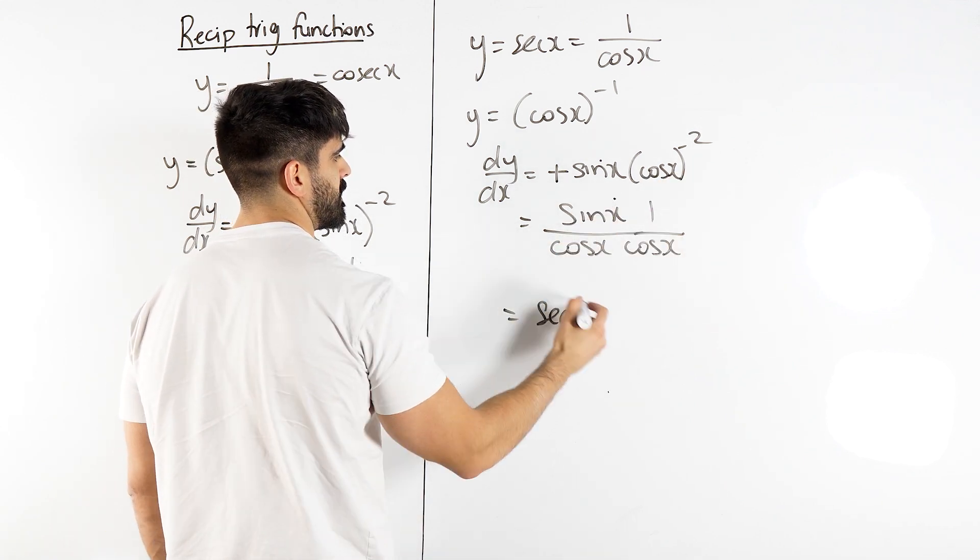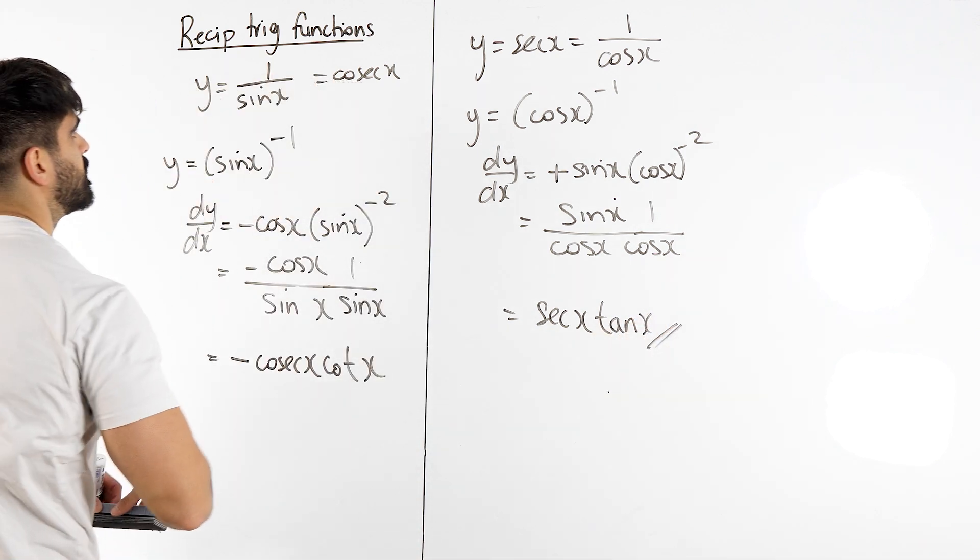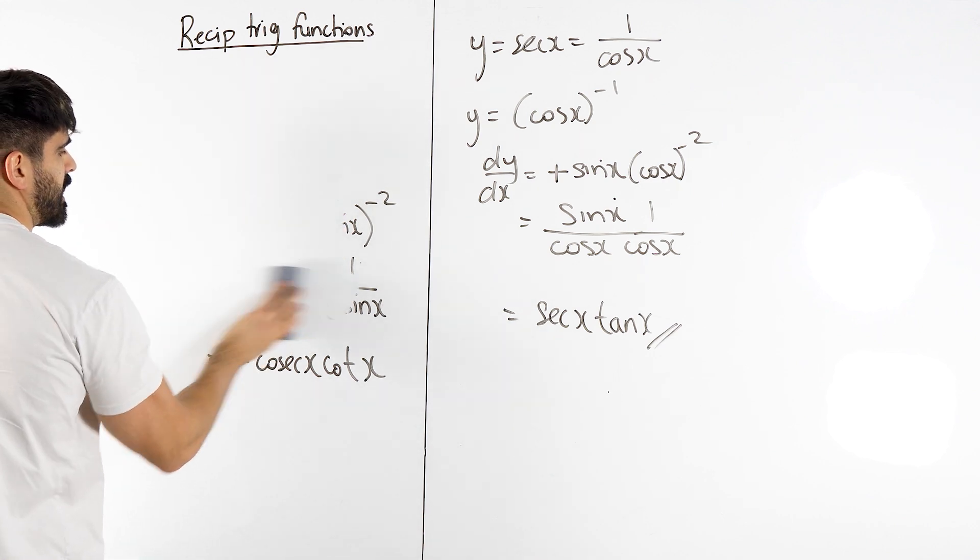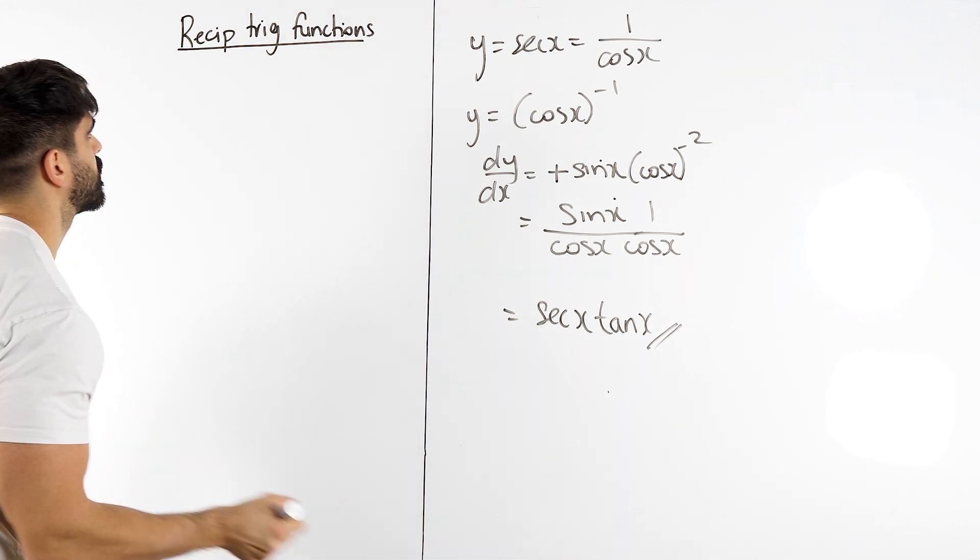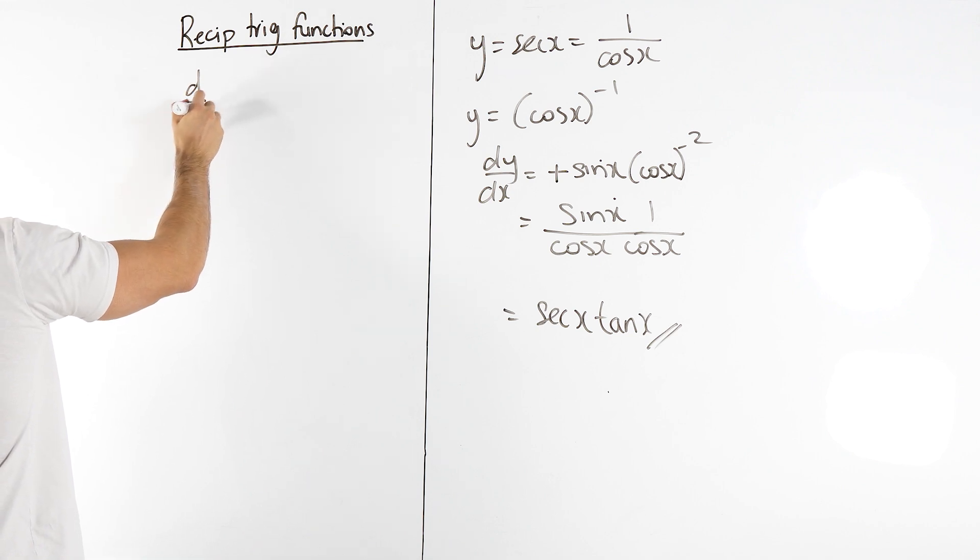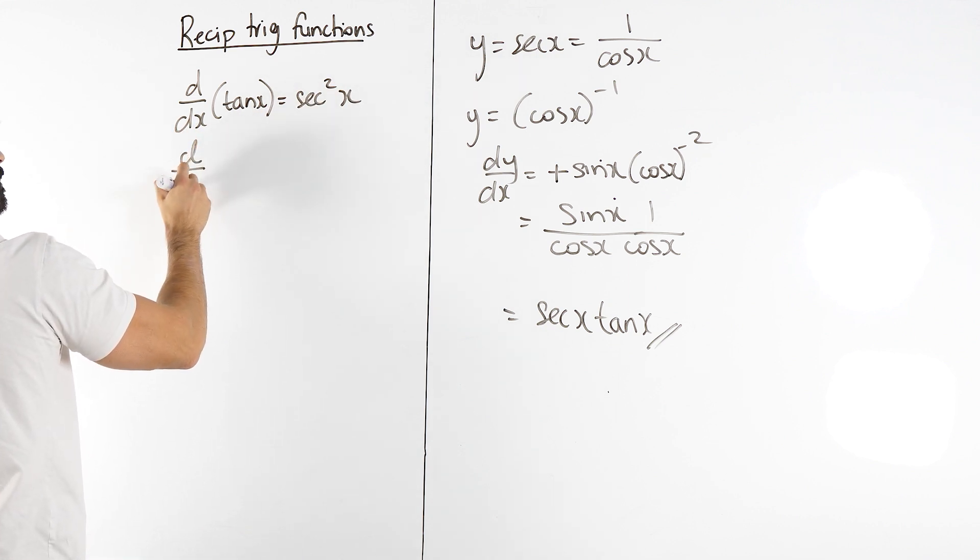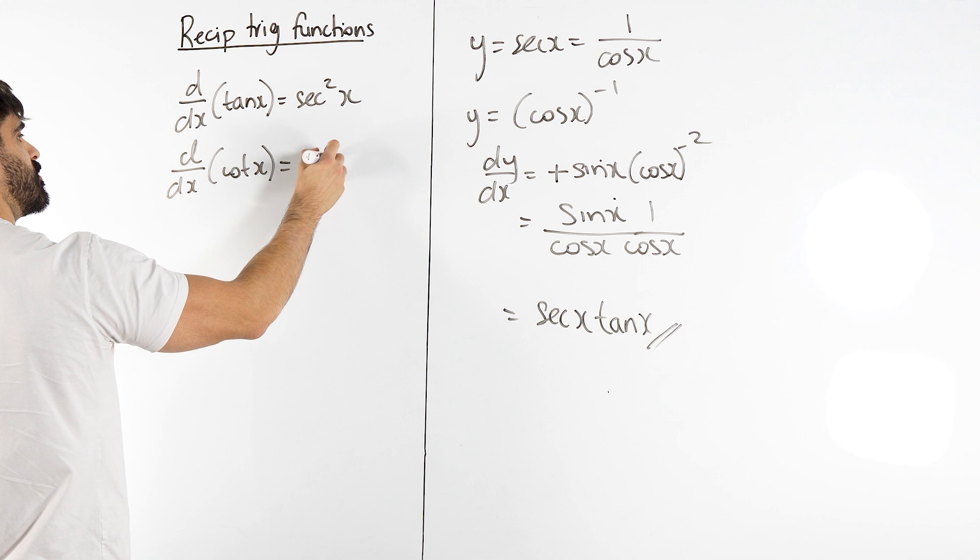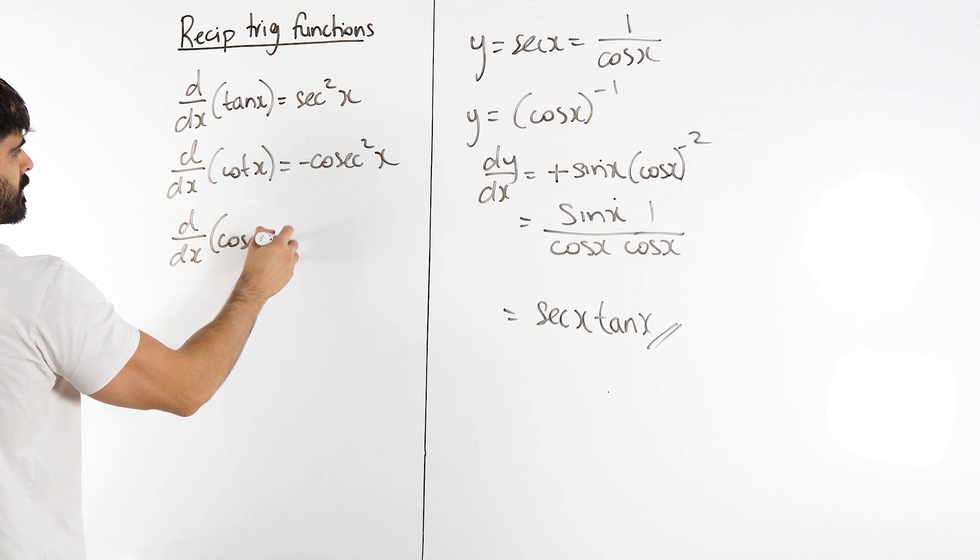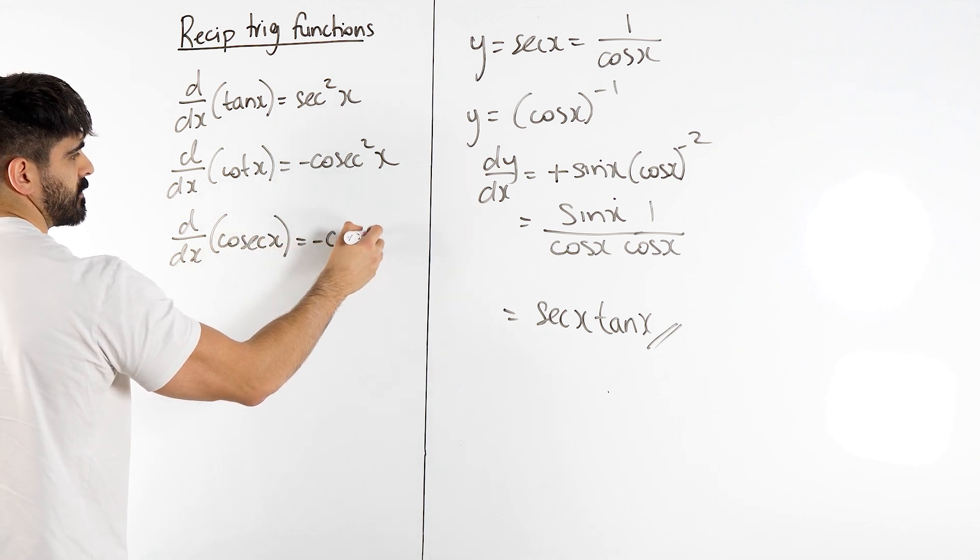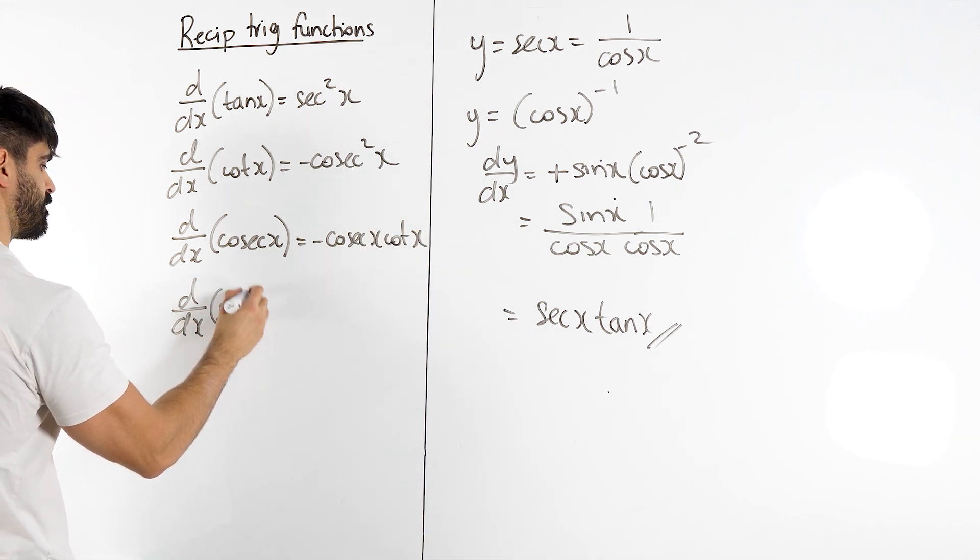So you get one over cos which is sec, and then sin over cos is tan. Let's summarize all of these. You need to remember them. I don't want to hear about anyone talking about formula booklets. If you need a formula booklet, you've not studied hard enough. So the differential of tan x is sec squared, the differential of cot x is minus cosec squared, cosec is minus cosec cot, and the differential of sec is sec tan.